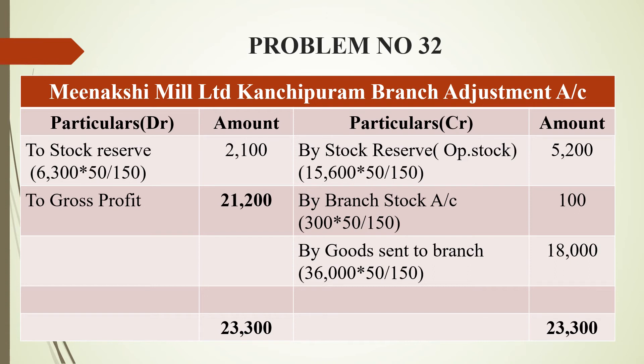For surplus: 300 × 50/150 = Rs. 100 (profit portion). By goods sent to branch — goods sent to branch on debit side of branch stock account — we work on the credit side, that is 18,000. We then calculate the cost price, and the balancing figure on the debit side is Rs. 21,200. Grand total is Rs. 23,300 on both sides.